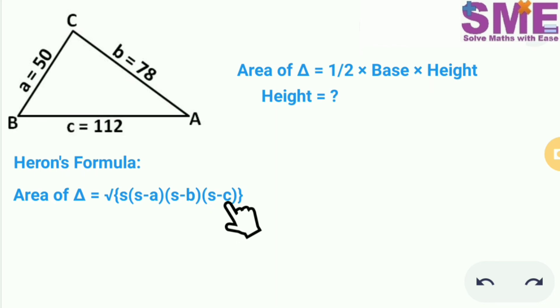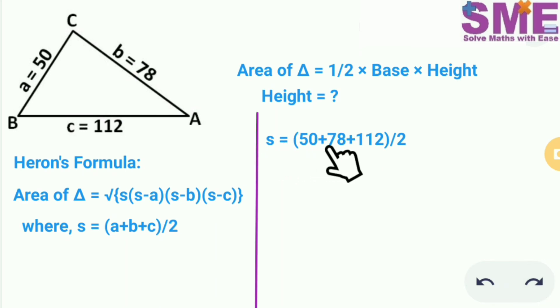Where a, b and c are the sides of the triangle and the value of s is equal to the sum of the sides divided by 2. So first let's calculate the value of s. The value of s is equal to the sum of the 3 sides divided by 2. So the value of s comes out as 120m.